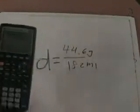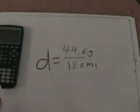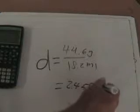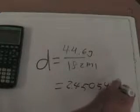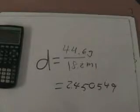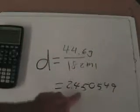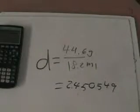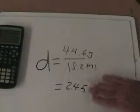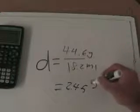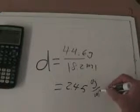Now we're going to round it for significant figures. So what we get is 2.450549, but since this has three significant figures, and this has three significant figures, we'll round our answer to three significant figures, and what we'll get is 2.45 grams per milliliter.